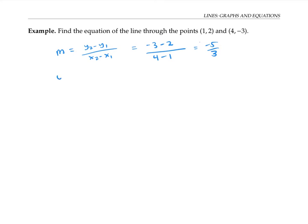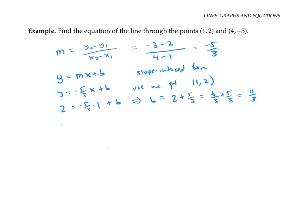So we can use the standard equation for the line, this is called the slope intercept form. And we can plug in negative five thirds. And we can use one point, either one will do, we'll still get the same final answer. So let's use 1, 2 and plug that in to get two equals negative five thirds times one plus b. And so b is two plus five thirds, which is six thirds plus five thirds, which is 11 thirds. So our equation is y equals negative five thirds x plus 11 thirds.